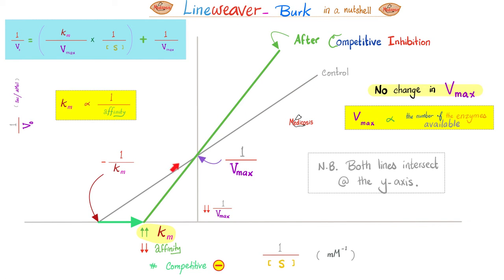A competitive inhibitor does not alter Vmax, so the point on the y-axis does not change. However, the Km increases — the line shifts right — because a competitive inhibitor lowers affinity between the enzyme and substrate. Atorvastatin hugs HMG-CoA reductase at the active site, inhibiting it and reducing affinity for the normal substrate, thereby lowering de novo cholesterol synthesis.